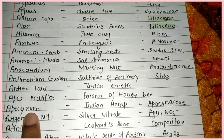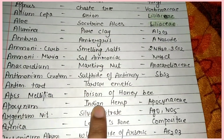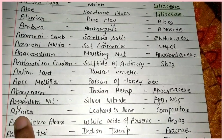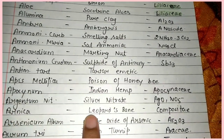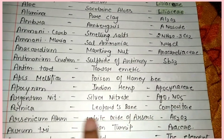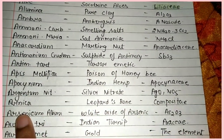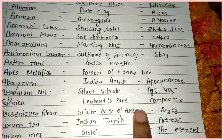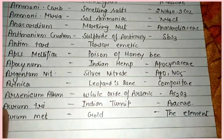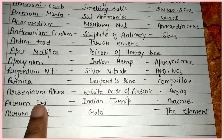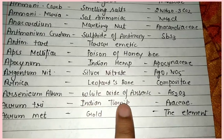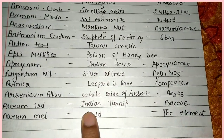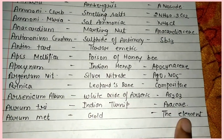Argentum Nitricum — Silver Nitrate, AgNO3. Arnica — Leopard's Bane, family Compositae. Arsenic Album — White Oxide of Arsenic, As2O3. Arum Triphyllum — Indian Turnip, family Araceae. Aurum Metallicum — Gold, which is an element.